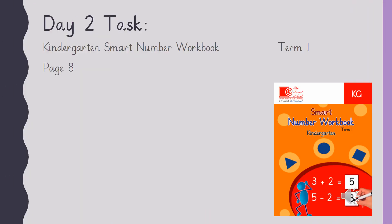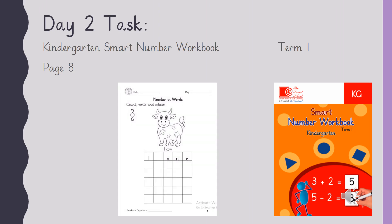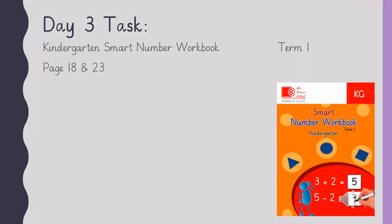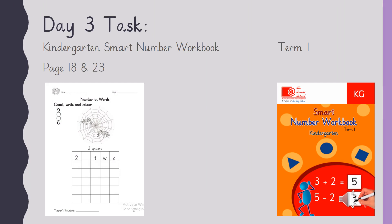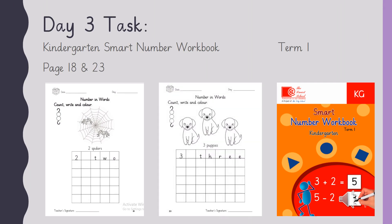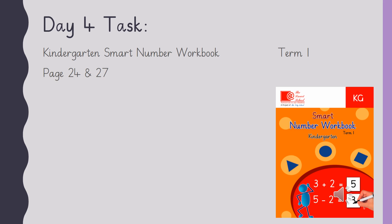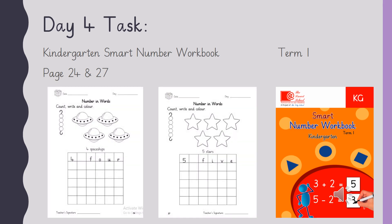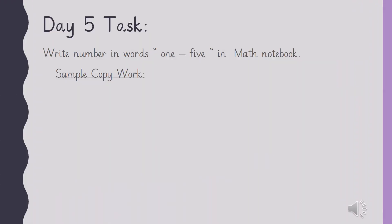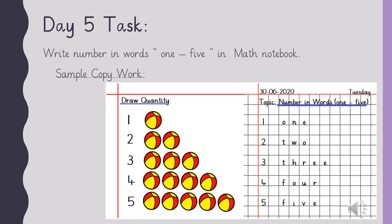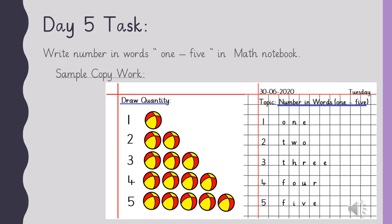Take out your smart number workbook. Open page number eight and write number one and the spelling O-N-E. On page number 18 and page number 23, write the spelling of number two and number three. On page number 24 and page number 27, write number four and its spelling, and number five and its spelling. In your math notebook, write numbers in words one through five, and also draw the related quantity.